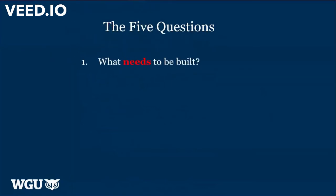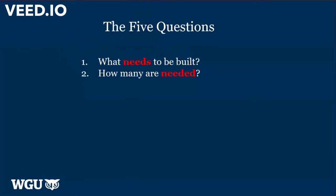There are five questions to consider in MRP. Number one: what needs to be built? If we put that into a service company, for example a restaurant, we could say: what meals do we need to prepare? Second: how many are needed? So if it's a furniture store building tables, how many tables need to be built? Going back to the restaurant setting: who do we need to serve, and how many people are there to be served?